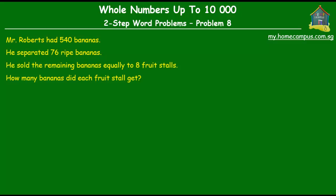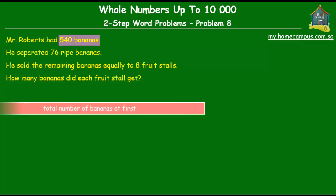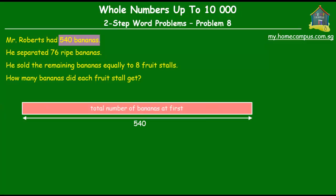Alright, so let's put the information that we have into a model diagram and try to understand the problem. Okay, so he had 540 bananas. So let's make a model for those 540 bananas. So this pink unit over here stands for the 540 bananas he had at first.